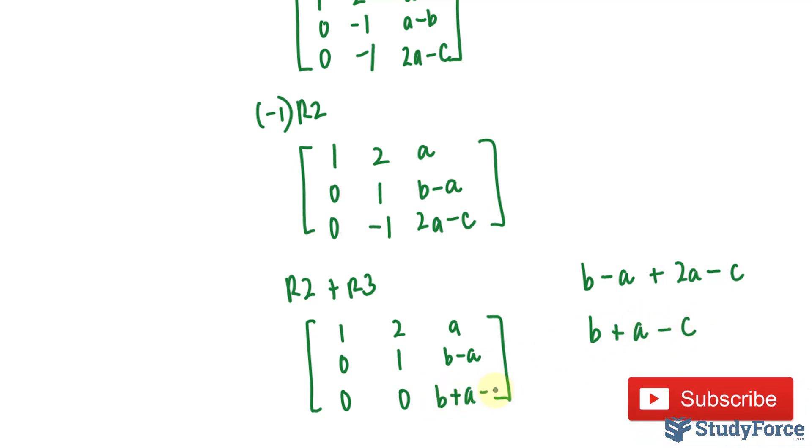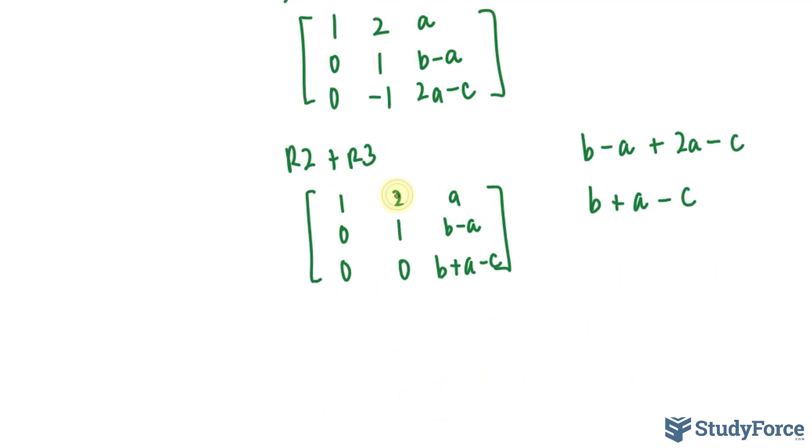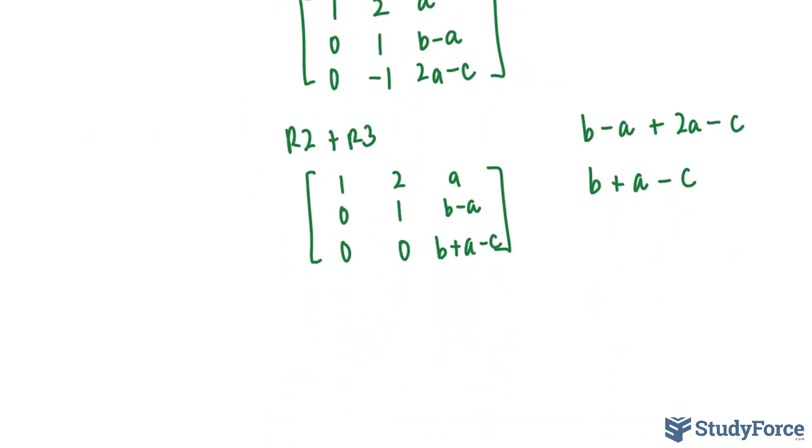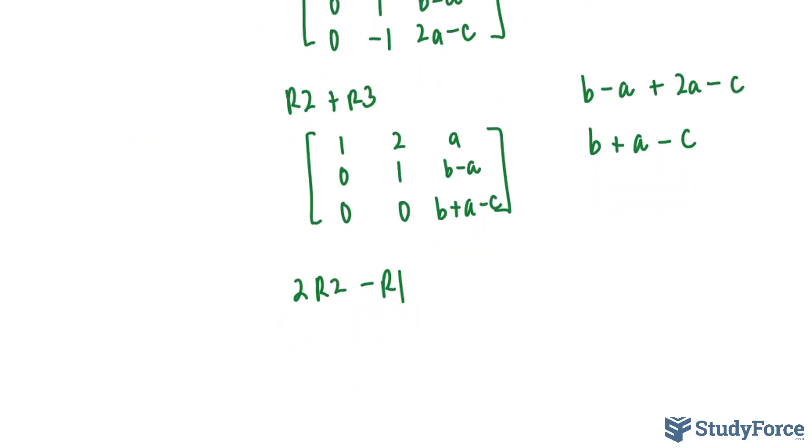B plus A minus C. The next thing that I will do is eliminate this 2 so that it becomes a 0 as shown over here. So I'll multiply row 2 by a factor of 2 and subtract row 1. Row 2 and row 3 remain unchanged. Let me show you that. 2 times 0 is 0 minus 1 is -1. 2 times 1 is 2 minus 2 is 0. B minus A times 2 minus A, which simplifies to 2B minus 2A minus A, which is 2B minus 3A.